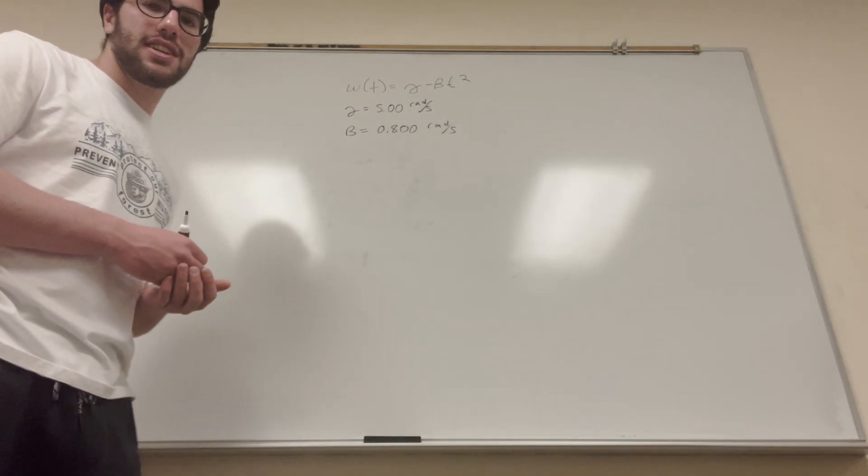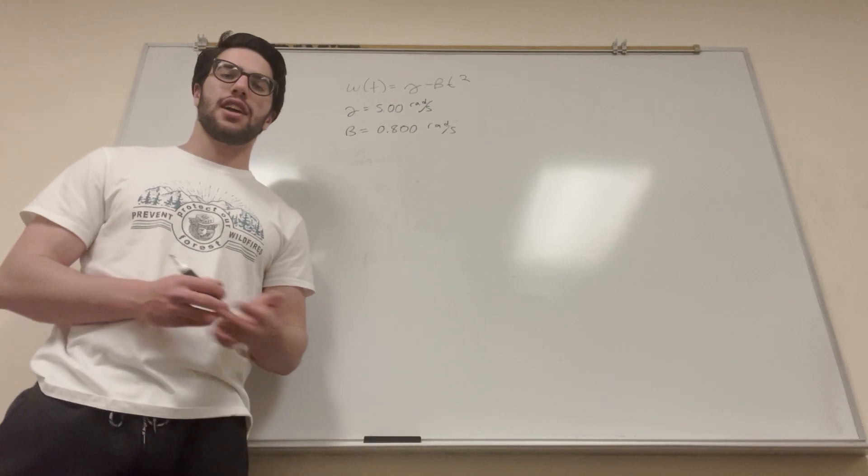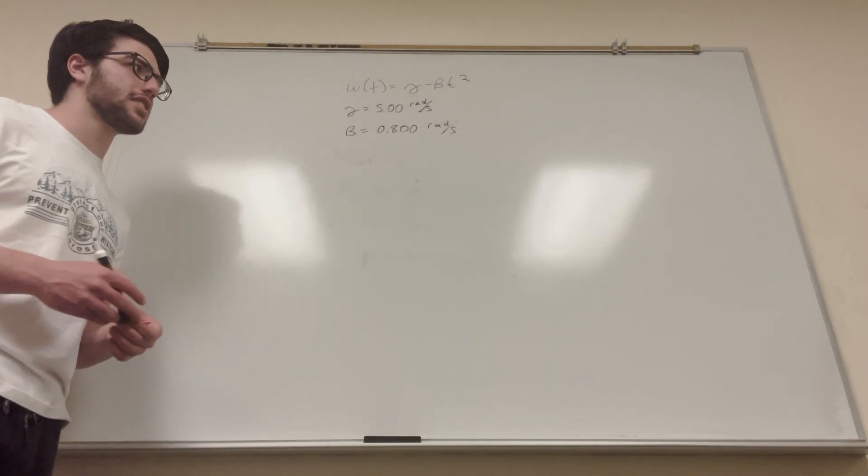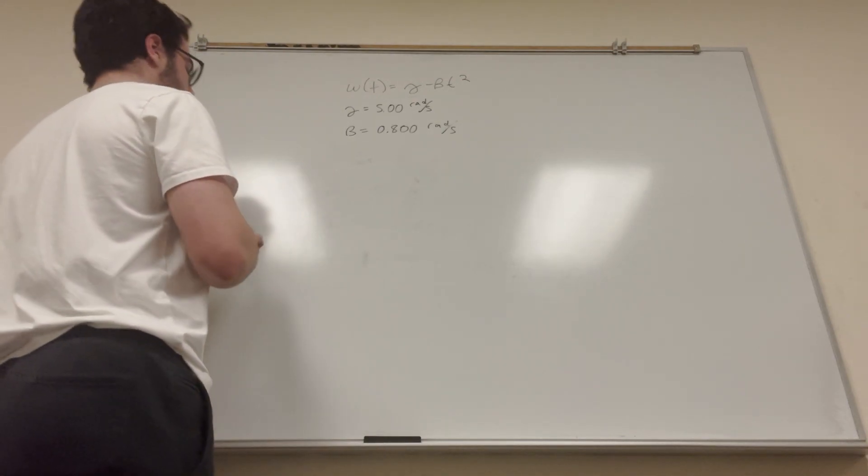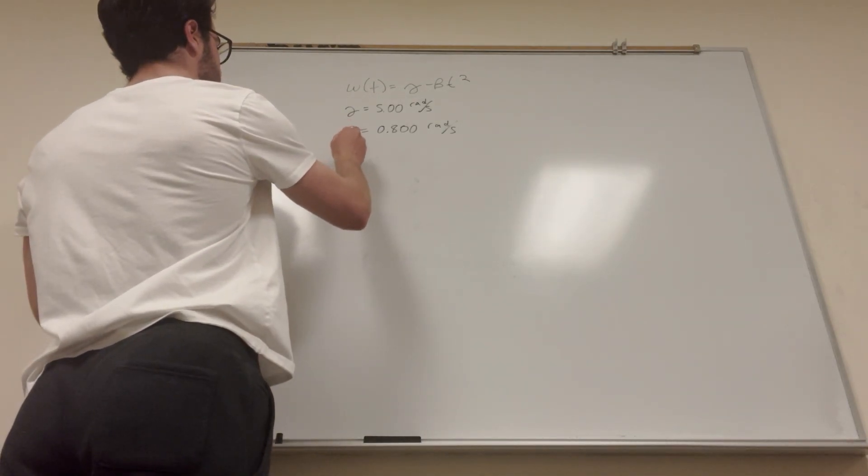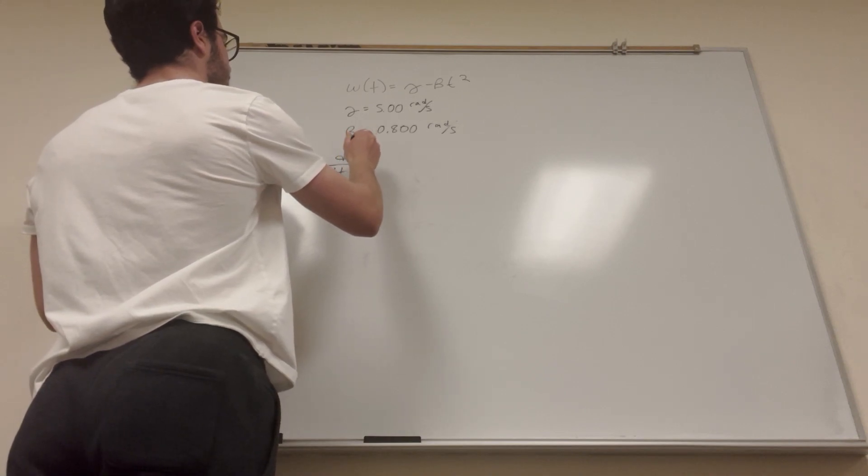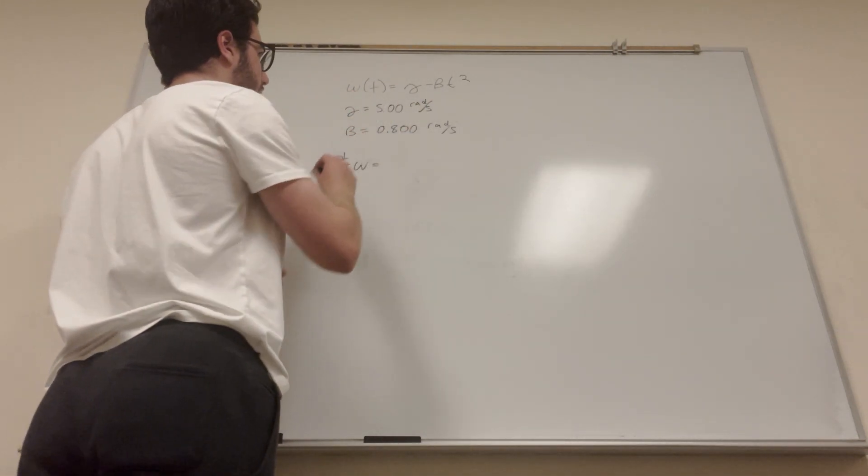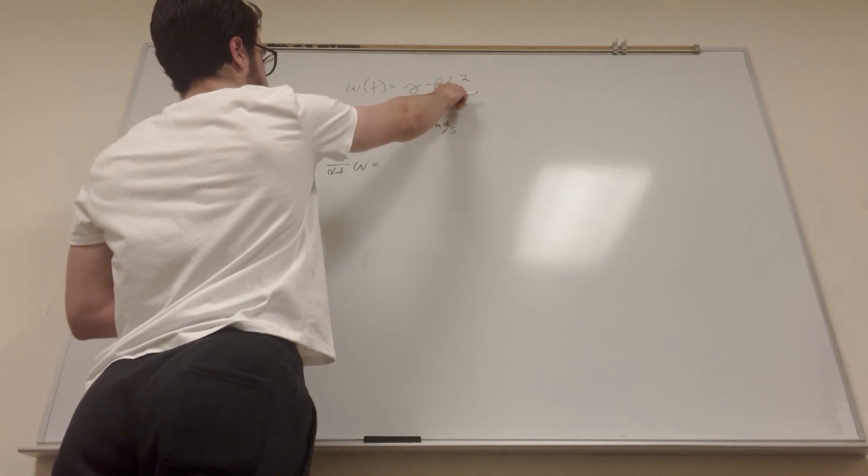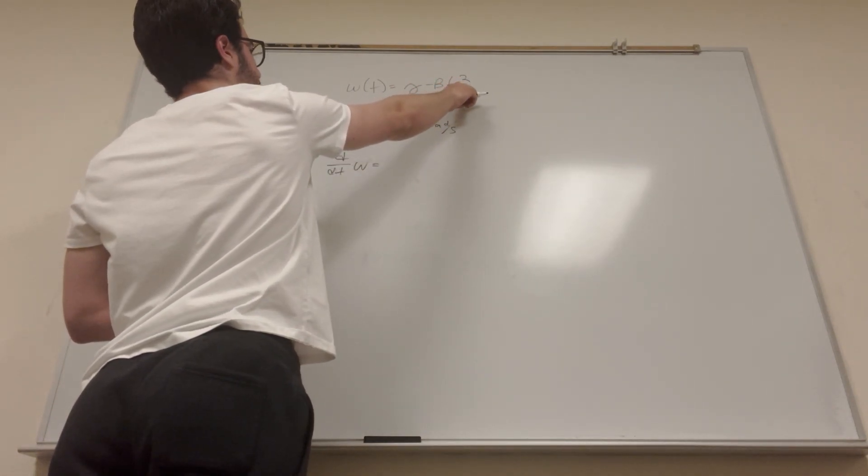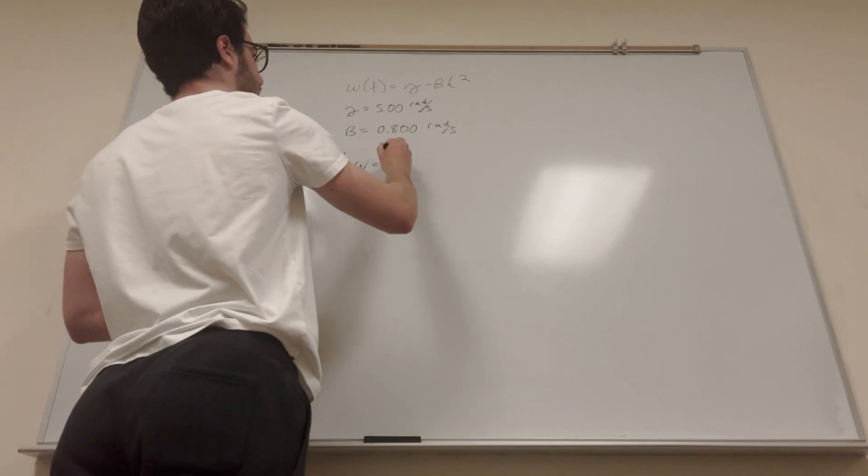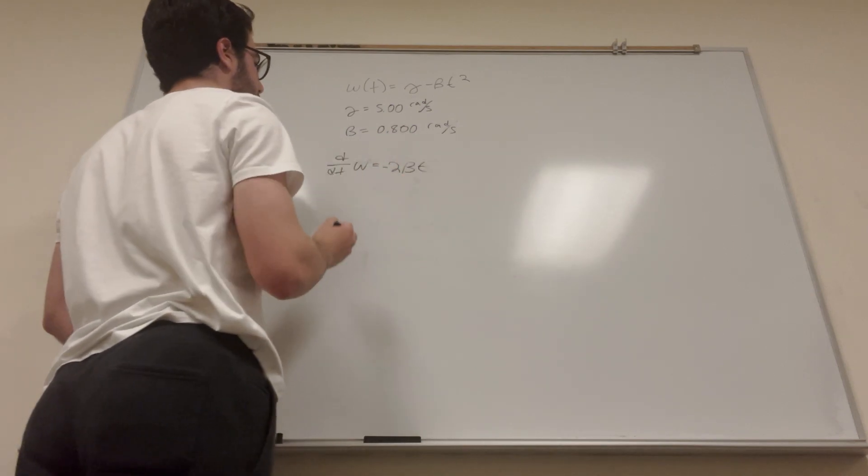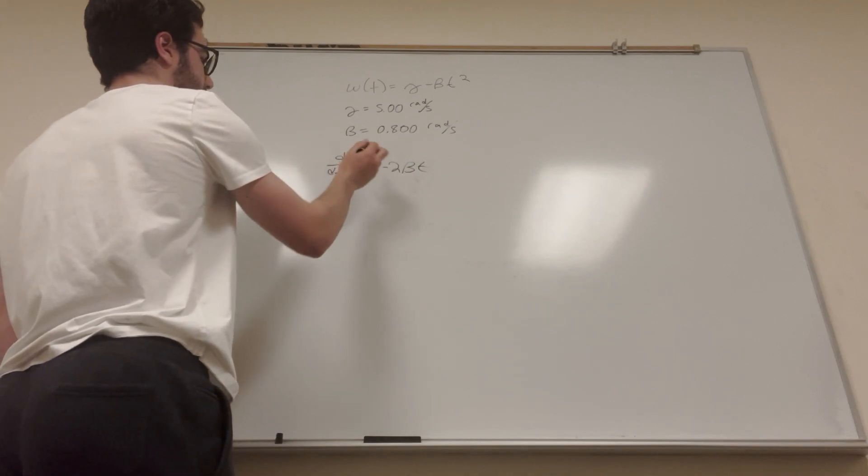So we know that acceleration is the derivative of velocity, right? So same thing for angular acceleration, it's the derivative of angular velocity. So if you take the derivative with respect to time of the angular velocity, this gamma is just a constant, so that's going to go away. And then it's going to be beta t squared, so the t squared is going to become t, and the 2 is going to drop down in front. So it's going to be negative 2 beta t. Okay, so then this is equal to acceleration.